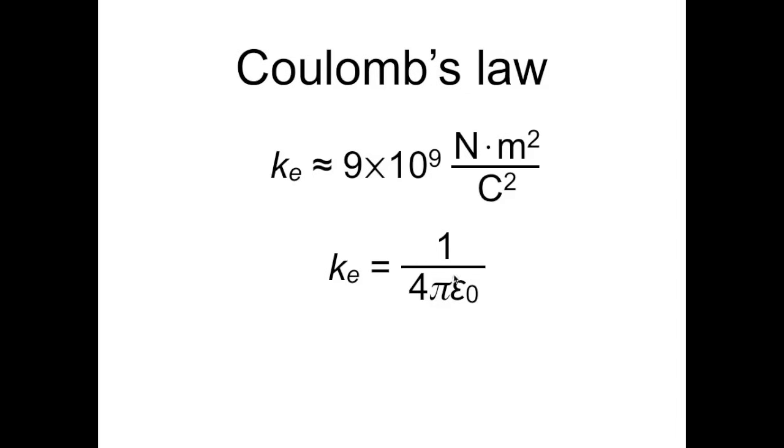and epsilon naught is what's known as the vacuum permittivity, also known as the permittivity of free space, and it's approximately equal to 8.85 times 10 to the minus 12 Coulomb squared per newton meter squared.